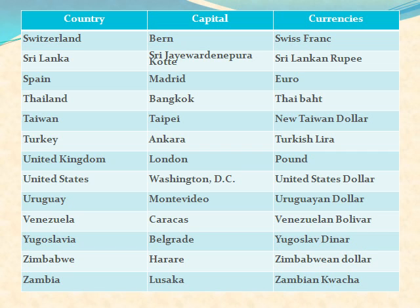Sweden: its capital is Stockholm and currency is Swedish Krona. Switzerland: its capital is Bern and currency is Swiss Franc. Sri Lanka: its capital is Sri Jayawardenepura Kotte and currency is Sri Lankan Rupee. Spain: its capital is Madrid and currency is Euro. Thailand: its capital is Bangkok and currency is Thai Baht. Taiwan: its capital is Taipei and currency is New Taiwan dollar. Turkey: its capital is Ankara and currency is Turkish Lira.